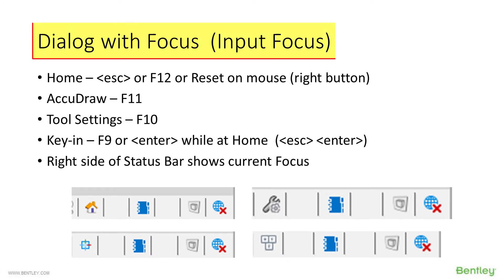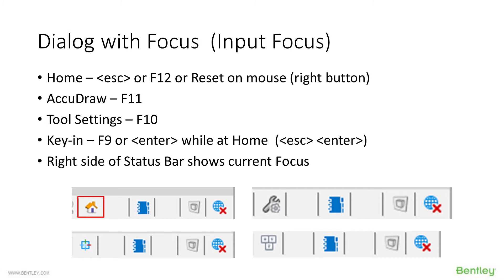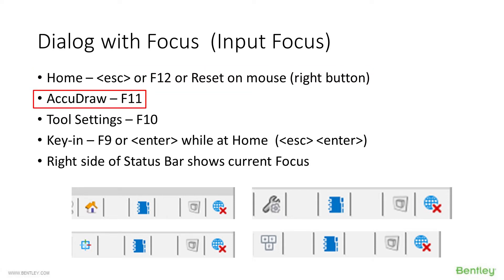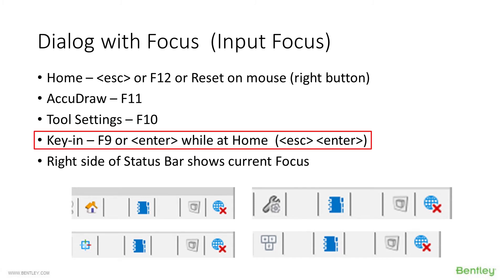So what does 'dialogue with focus' mean? At the bottom right of your status bar there is an icon — about six icons in depending on which you have turned on. Home looks like the little house, there's the AcuDraw icon, the Tool Settings icon, and the Key-in Window icon. To give Home focus: press Escape, F12, or Reset on the mouse. To give AcuDraw focus: press F11. Tool Settings: F10.